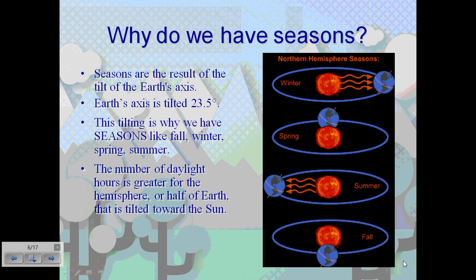So, why do we have seasons? Seasons are the result of the tilt of the Earth's axis, and our Earth's axis is tilted at 23.5 degrees. This tilting is why we have seasons such as fall, winter, spring, and summer.